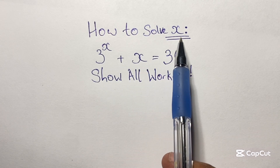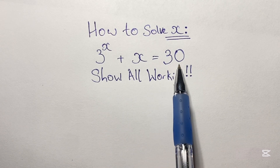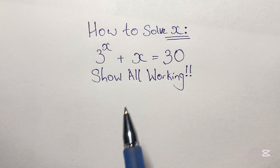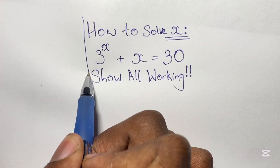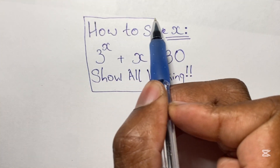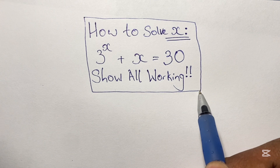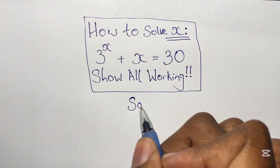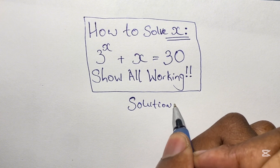Greetings again everyone, welcome back to my channel. Here we have another algebraic exponential equation to solve: 3 to the power of x plus x is equal to 30, and we're supposed to show all working for our solution for x. Now as simple as this equation is, don't be deceived — it is not that easy to solve. However, just by putting in random numbers we can already know the solution for x.